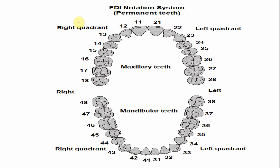In the FDI notation system, the right maxillary canine is numbered 13, and the left maxillary canine is numbered 23. The digit 1 indicates the right upper quadrant and 3 is the tooth number; similarly, 2 indicates the left upper quadrant and 3 is the tooth number.